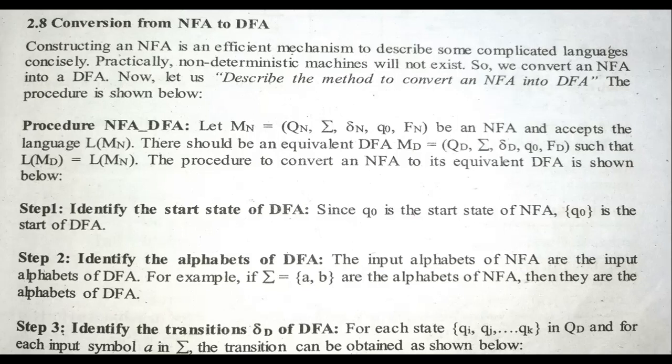In case of designing the NFA, whatever the start state we have in NFA, the same will be the start state of DFA. Step two: identify the alphabet of DFA. The input alphabets of NFA are the input alphabets of DFA also. So from NFA we get two components identical for DFA: the start state and the alphabet.